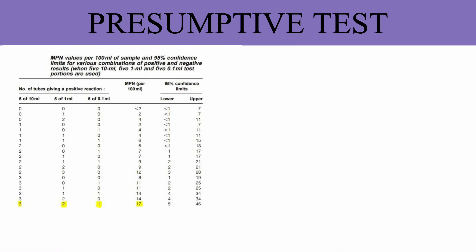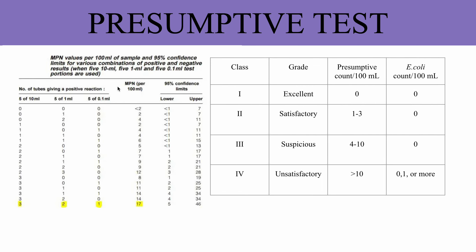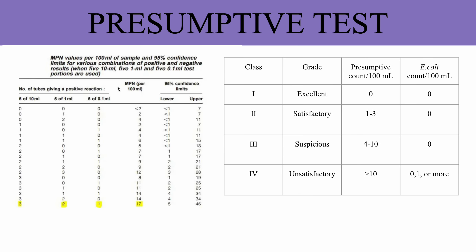This table can be referred to for understanding whether the sample is contaminated with coliforms. Using this table, you can conclude the grade of the water sample — whether it is excellent, satisfactory, suspicious, or unsatisfactory.